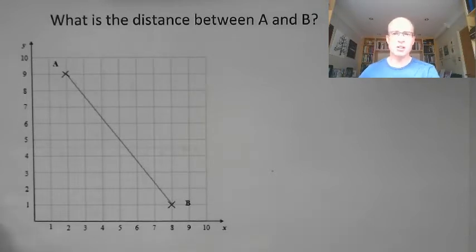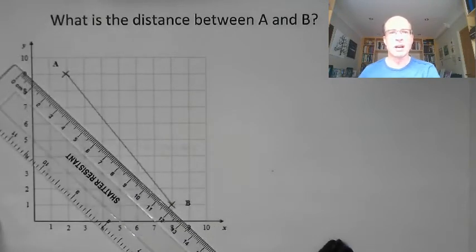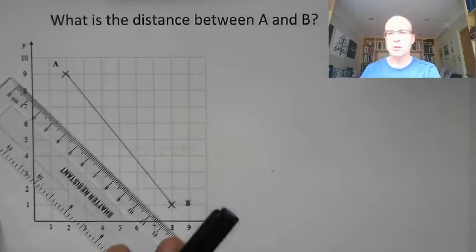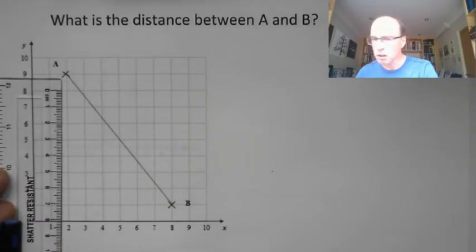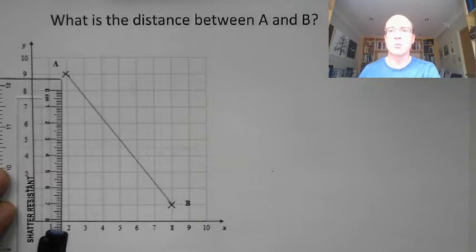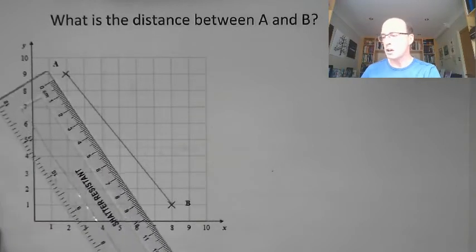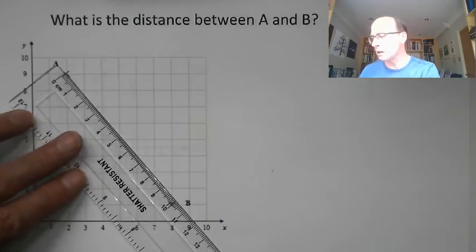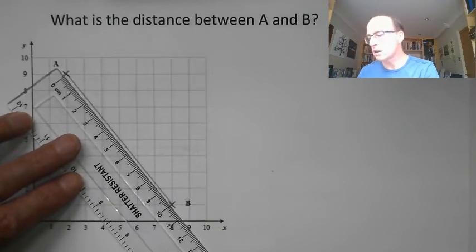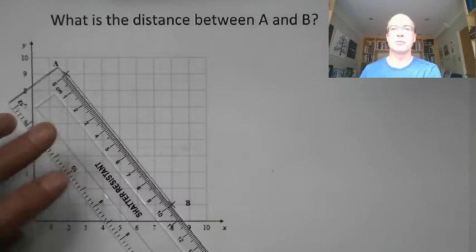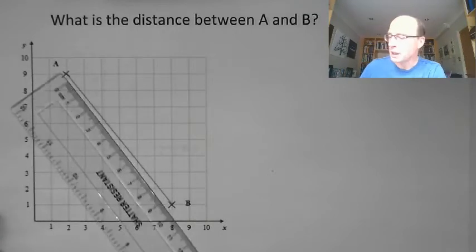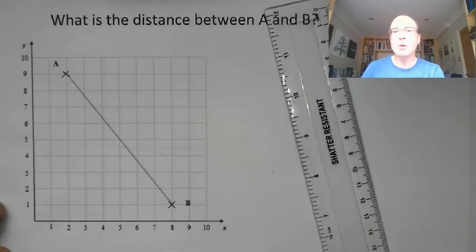And I could cheat, I could use my ruler over here. The grids on here are one centimetre long, so one centimetre high and one centimetre across. I could measure the distance between A and B, let's see what we get. I've got ten centimetres, now I know the answer that I'm looking for when I do my Pythagoras. But I want to be able to work that out using my maths.